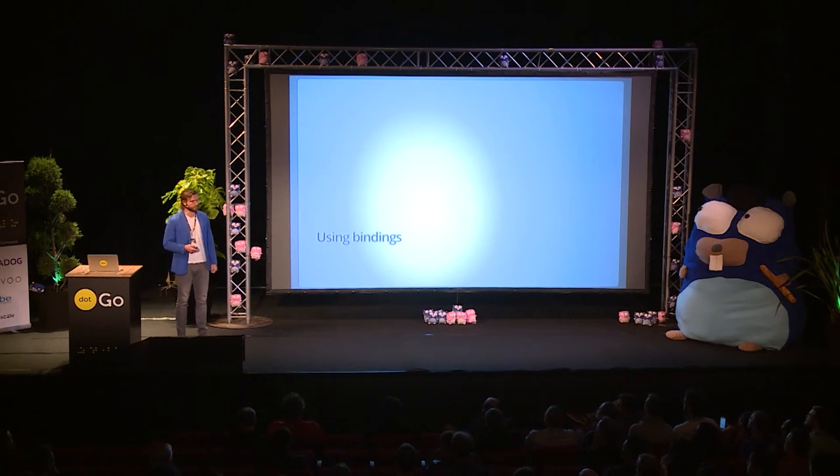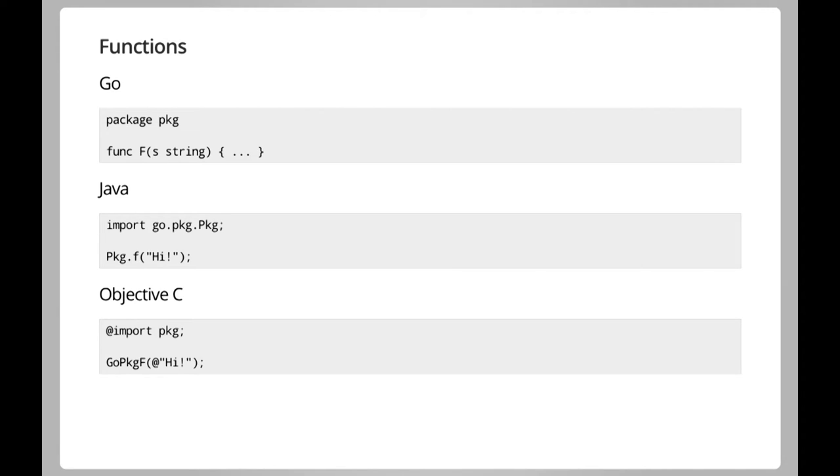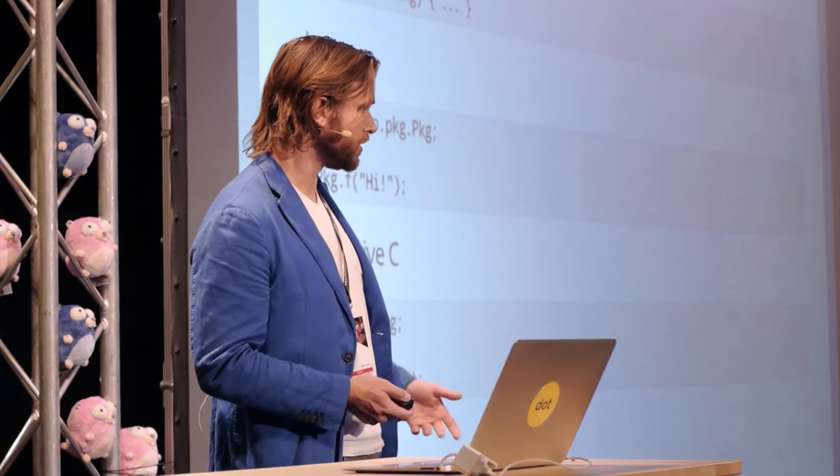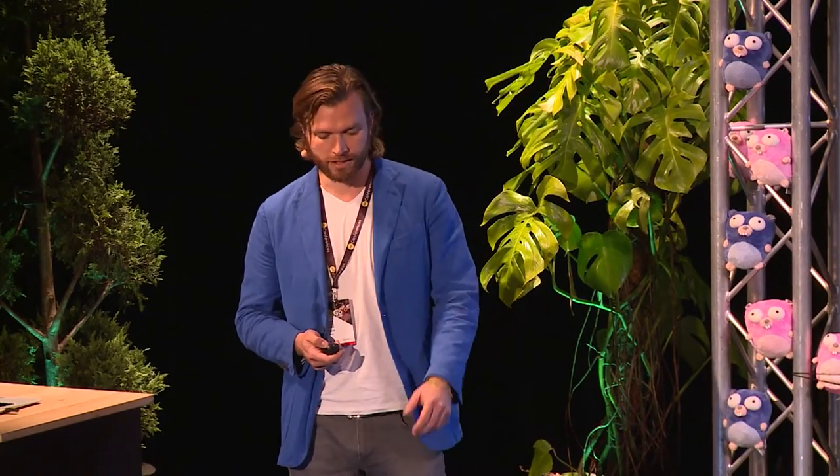Most of this is old news — Go Mobile has been doing this for a while — but it's worth showing how easy it is to use your Go code from your native mobile app. If you have a Go package with an exported function, Go Mobile will generate bindings allowing you to import that package as a Java package and call it as a Java function on the class representing your package.